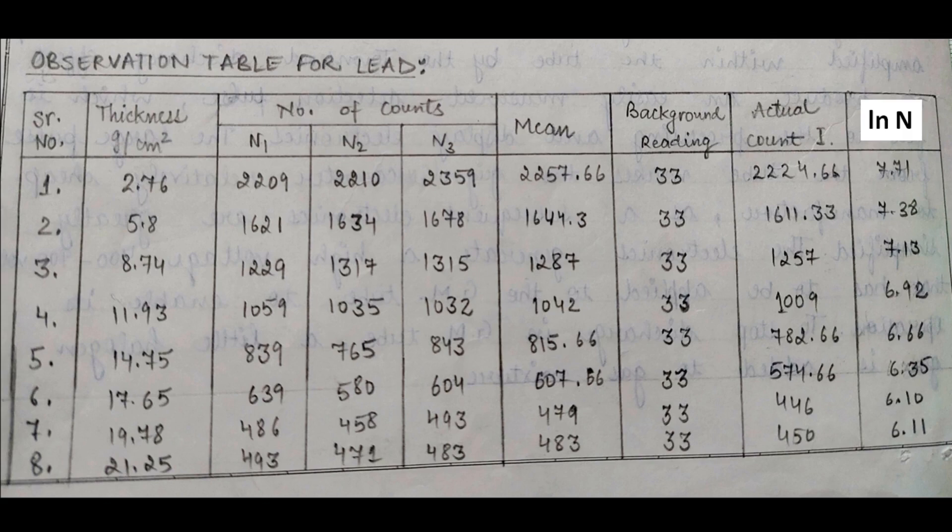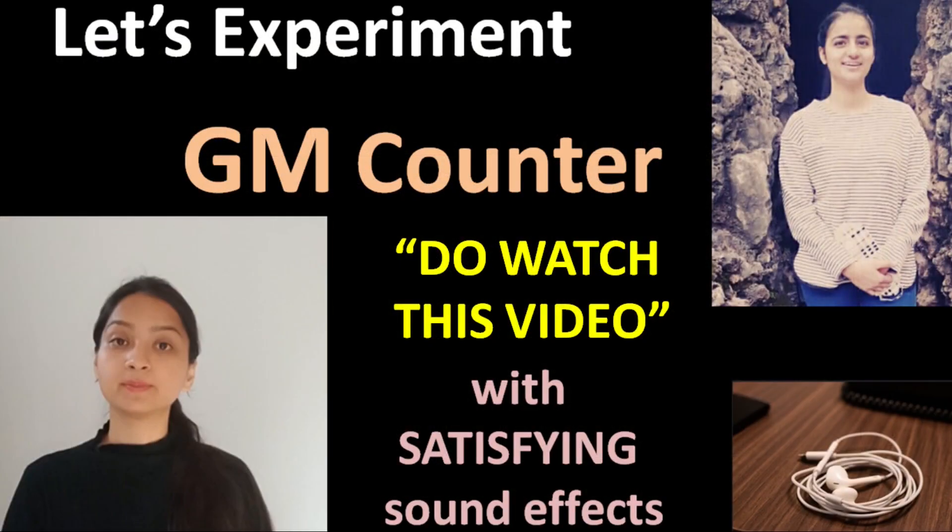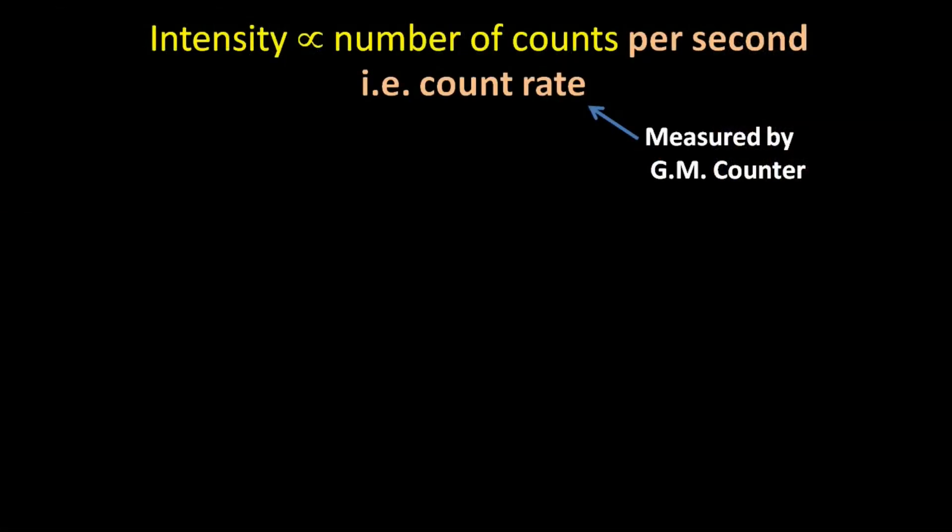Likewise, the thickness of the absorber can be increased and follow the same procedure to finally calculate the natural log ln of the actual counts. In case you have doubts regarding the working of the GM counters and how to take the readings, you can go back and check this video on the GM counters. So if N₀ and N are the number of counts corresponding to I₀ and I, we have ln(N) = ln(N₀) - μx, which can also be written like this.